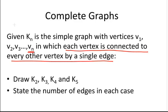There are n vertices and we denote this K_n. So a complete graph with n vertices is denoted K_n. Now, draw K2, K3, K4 and K5 and state the number of edges in each case.